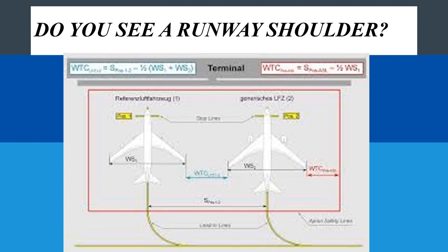The wingspan separates the shoulder of your taxiway from the apron. It is very important to check the distance between two aircraft wings and ensure that minimum separations have been achieved. While the aircraft is on the taxiway, the distance between the taxiway centerline and the safety margin of your apron is determined by the wingspan. It is essential to ensure that all aircraft operating in your aerodrome are safe.